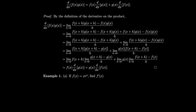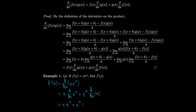Let's do an example. If f(x) = x·eˣ, let's find f′(x). By the product rule, that's the first function times the derivative of the second, plus the second times the derivative of the first. The derivative of eˣ is still eˣ, and the derivative of x is 1. So f′(x) = x·eˣ + eˣ. There's an eˣ in both terms, so we can factor that out to get eˣ(x + 1).